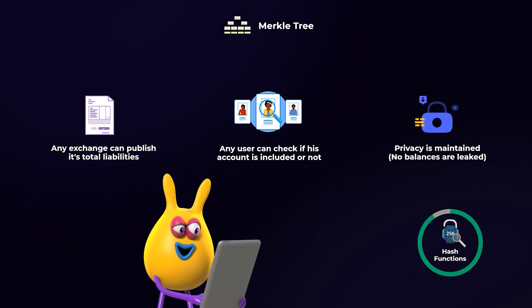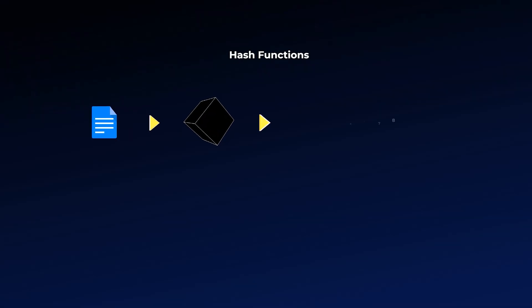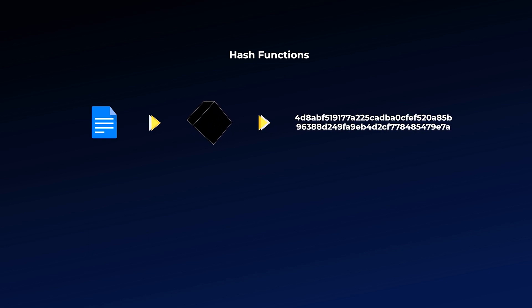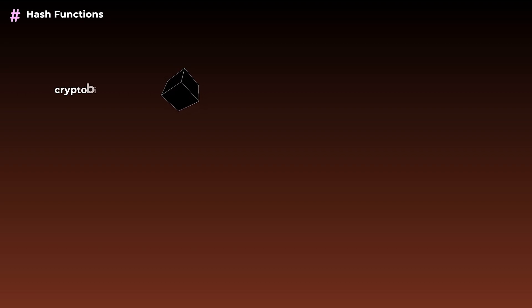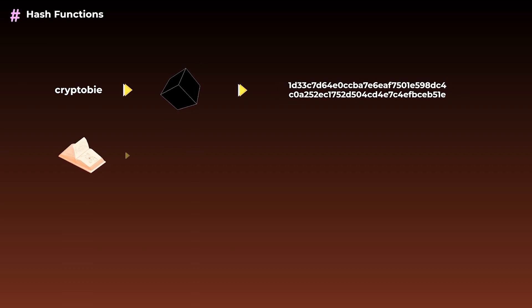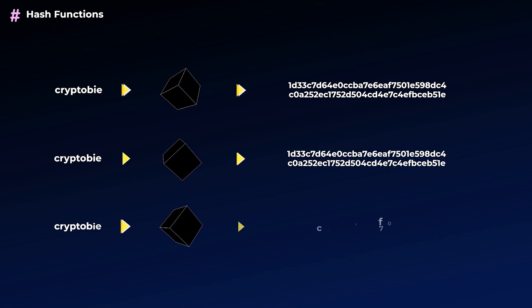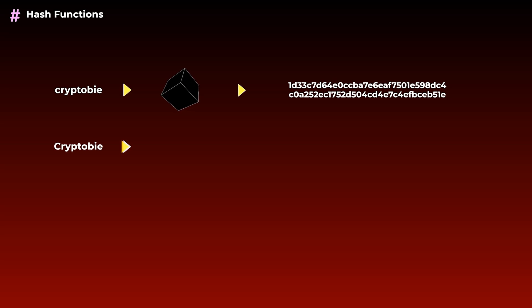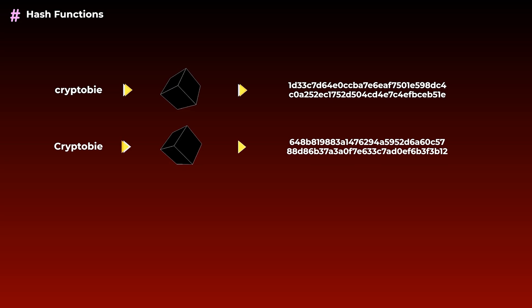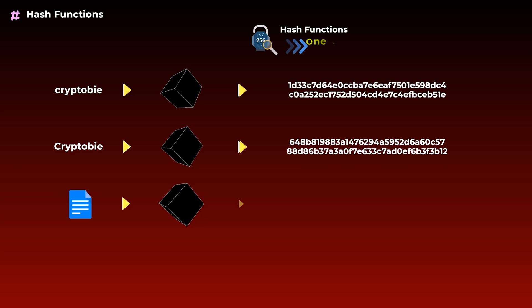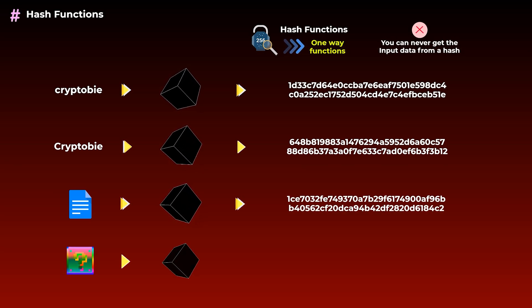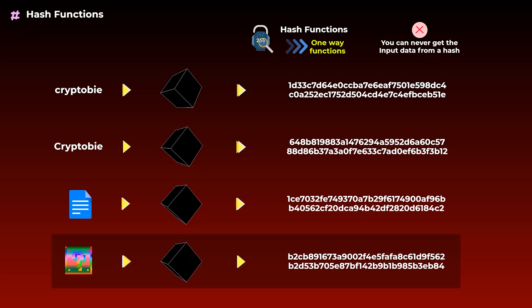If you already know what a hash function is, you can skip this part. A hash function is like a black box that you give any type of data, and it will give you a hash, which is a series of 64 letters and numbers. Here we are talking about the SHA-256 hashing function. This black box uses very complex math to convert any type of data into 64 letters and numbers. You can give it a single word, an entire book, or an image — it will always give you a hash of 64 letters and numbers. If you give it the same input many times, it will always give you the same hash. But if you slightly change the input, like replacing a small letter with a capital one, it will give you an entirely different hash. A very important thing to know is that hashing functions are one-way functions — you can get a hash from the data, but you can never reverse the hash to get the input data.